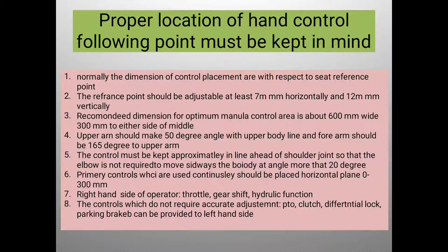For proper location of hand controls, the following points must be kept in mind: first, the dimensions of control placement are taken with respect to the seat reference point; second, the reference point should be adjustable at least 7 millimeters horizontally and some millimeters vertically. The recommended dimension for optimum manual control area is about 600 millimeters wide and 300 millimeters wide at the middle section.